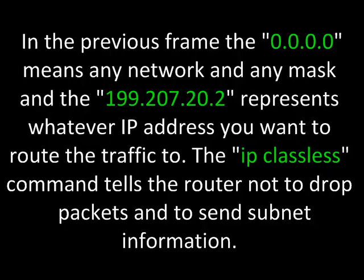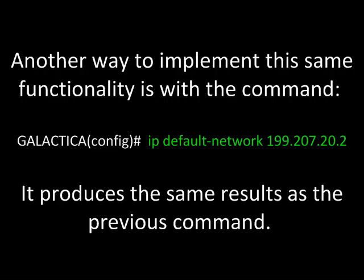Once again, 0.0.0.0 means any network and any mask, and the destination IP — for example 199.207.22 — represents whatever IP address you want to route the traffic to. The IP classless command tells the router not to drop packets and to send subnet information. Another way to implement this same functionality is with the command IP default-network followed by the destination IP address, typed from the global configuration command prompt. It produces the same results.